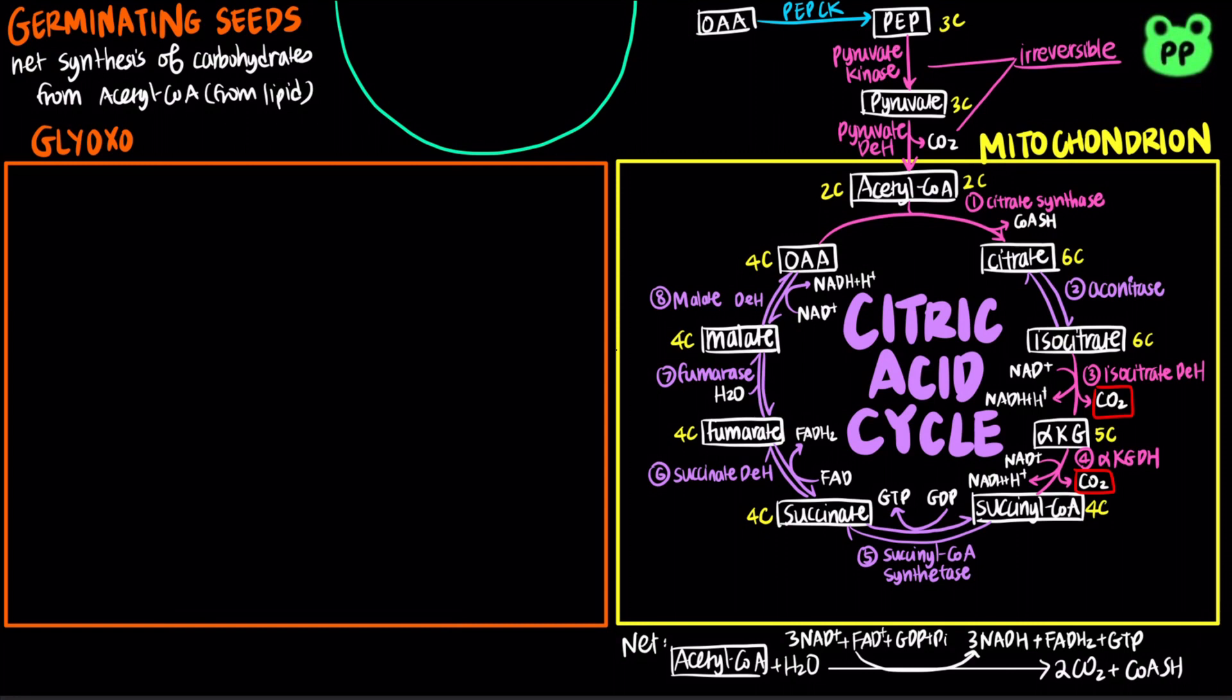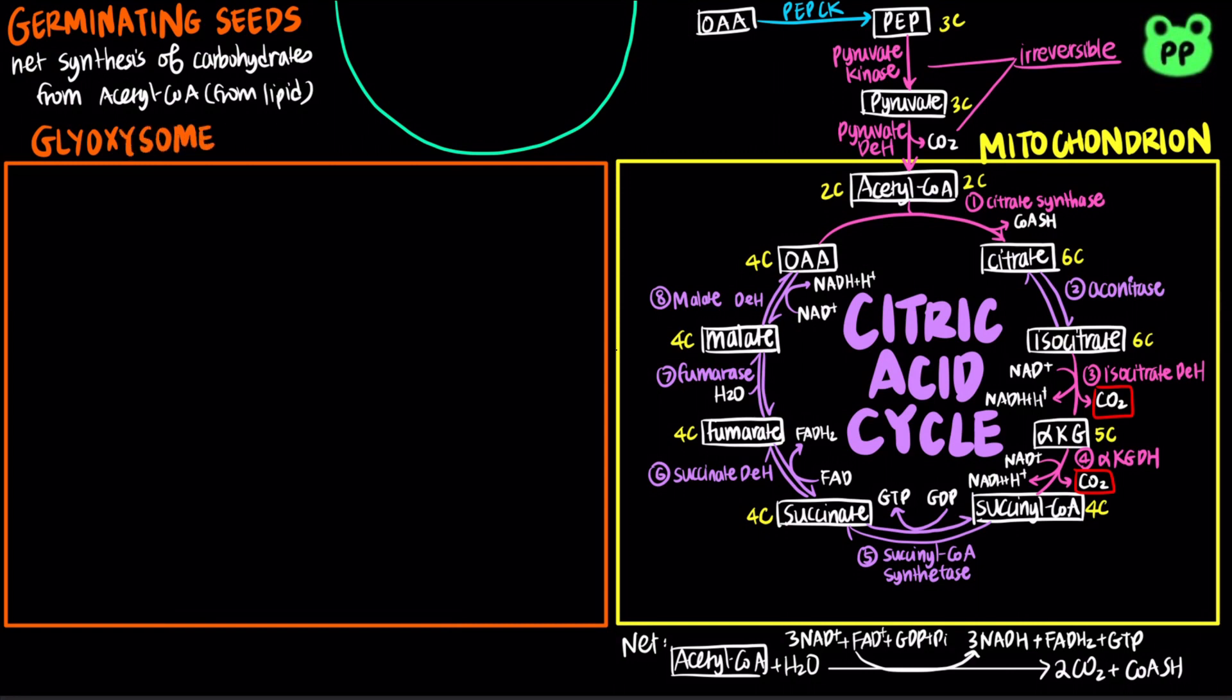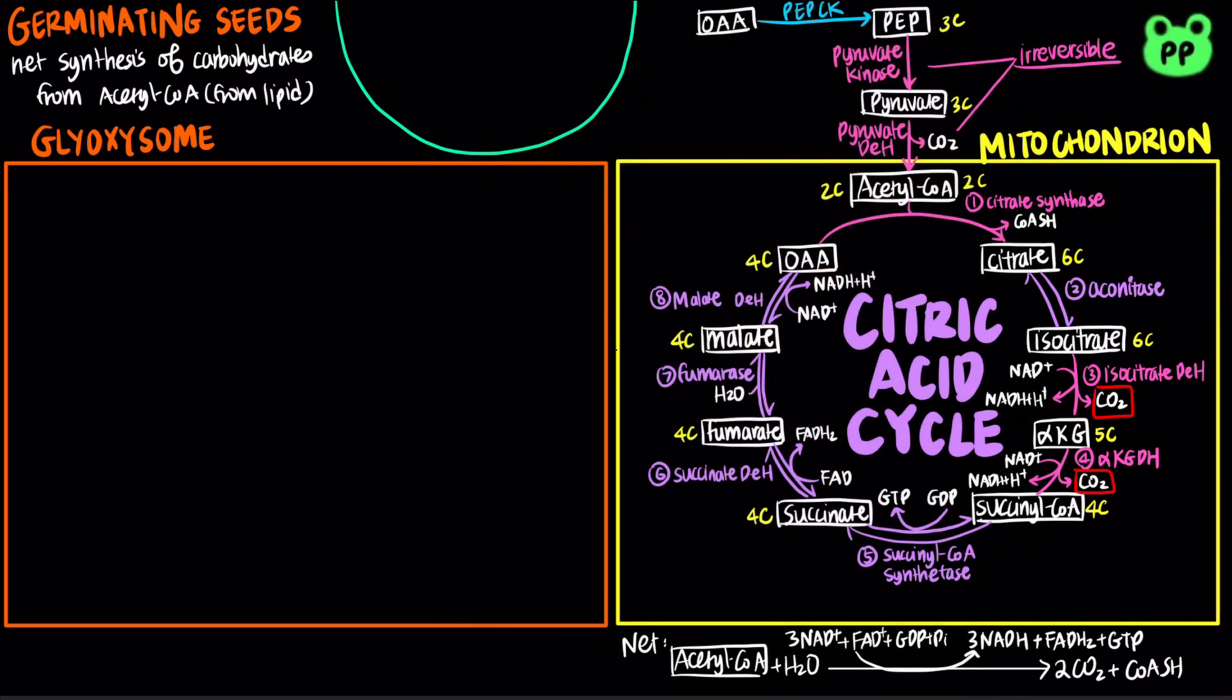The glyoxylate cycle occurs in a membrane-bounded organelle known as glyoxysome, which is a specialized peroxisome. Germinating seeds are filled with lipid bodies that are very rich in triacylglycerol, which degrades into fatty acids, which in turn undergoes beta-oxidation to form acetyl-CoA.